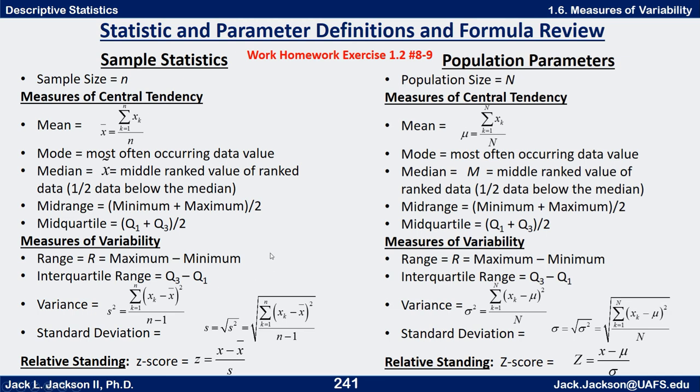For measures of variability, the range, usually capital R, is maximum minus minimum. Lowercase r is reserved for correlation later. The interquartile range is the distance between the lower and upper quartiles, so it's Q3 minus Q1. Same for both population and sample.